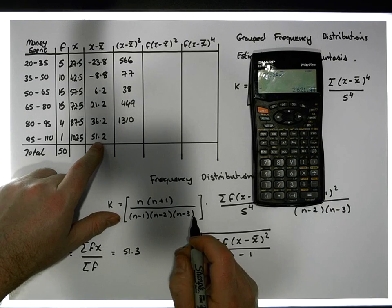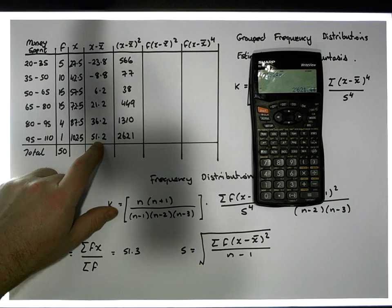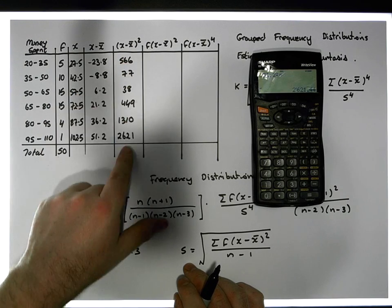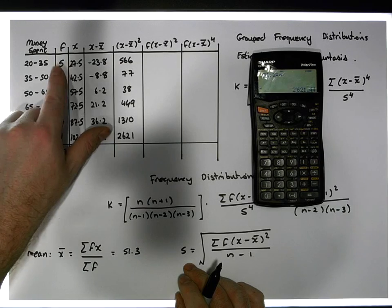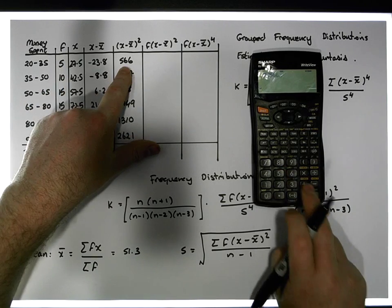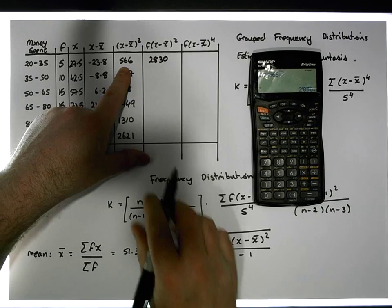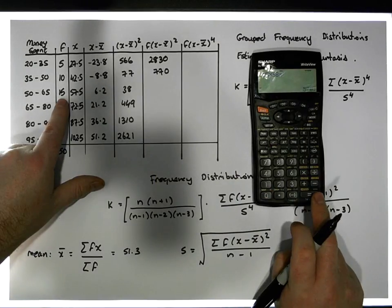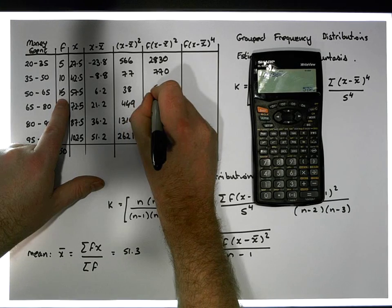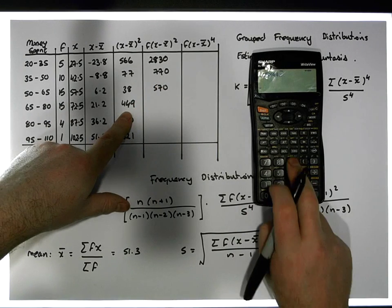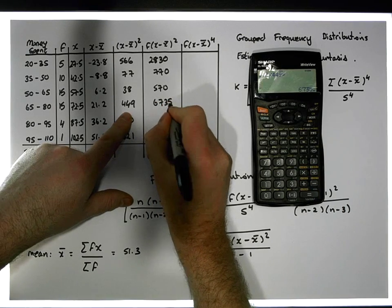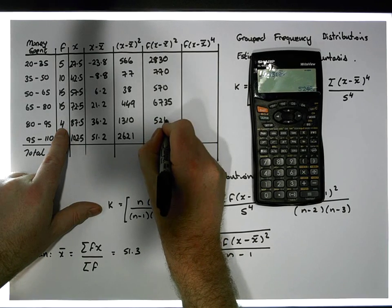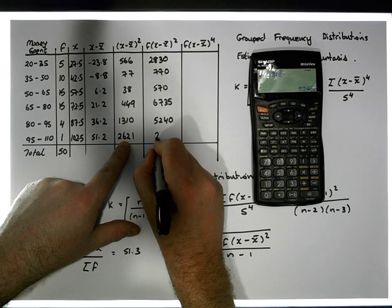And 51.2 squared gives approximately 2621. Now I'm going to take each of these squared distances and multiply them by their frequency. So: 5 times 566 gives 2830; 10 times 77 gives 770; 15 times 38 gives 570; 15 times 449 gives 6725; 4 times 1310 gives 5240; and 1 times 2621 gives 2621.